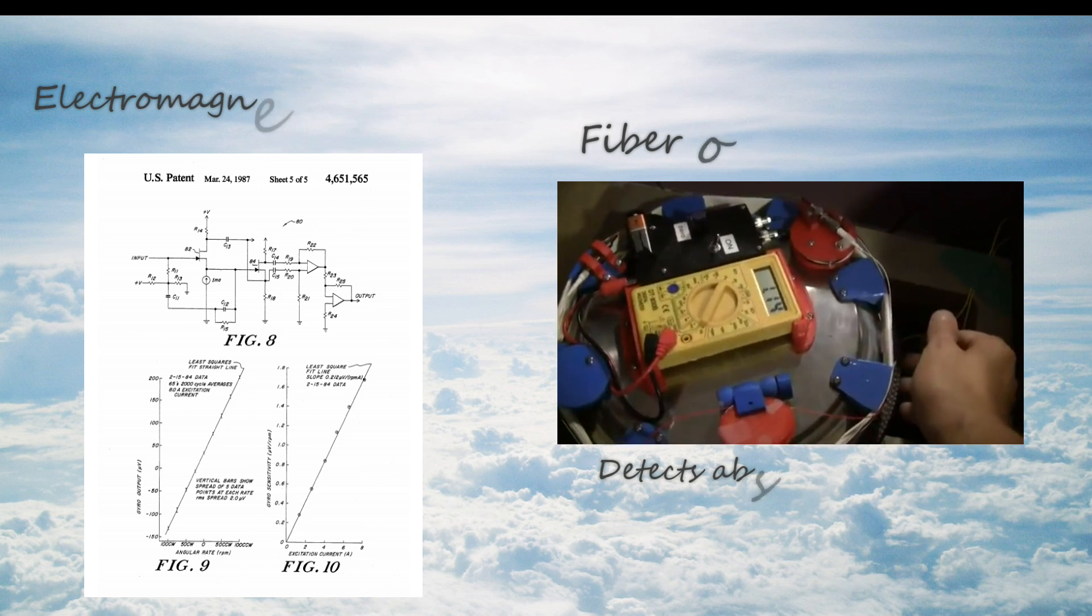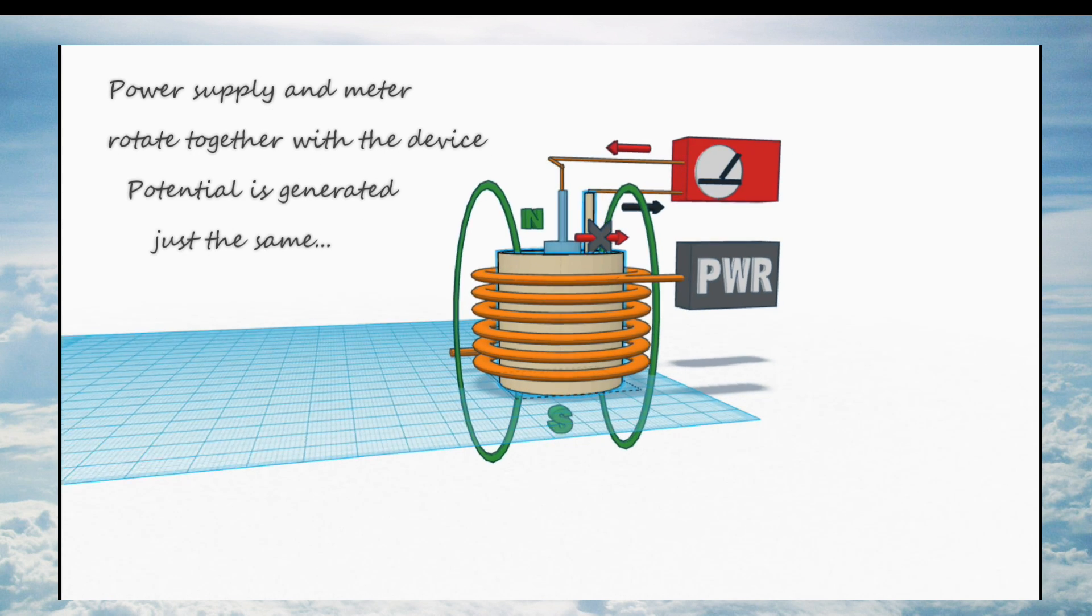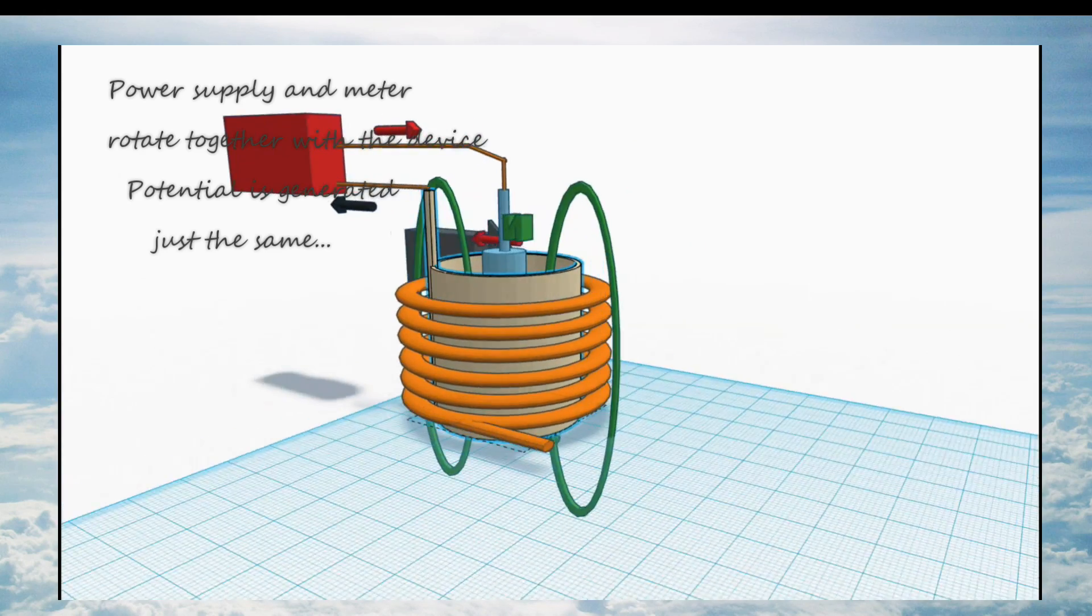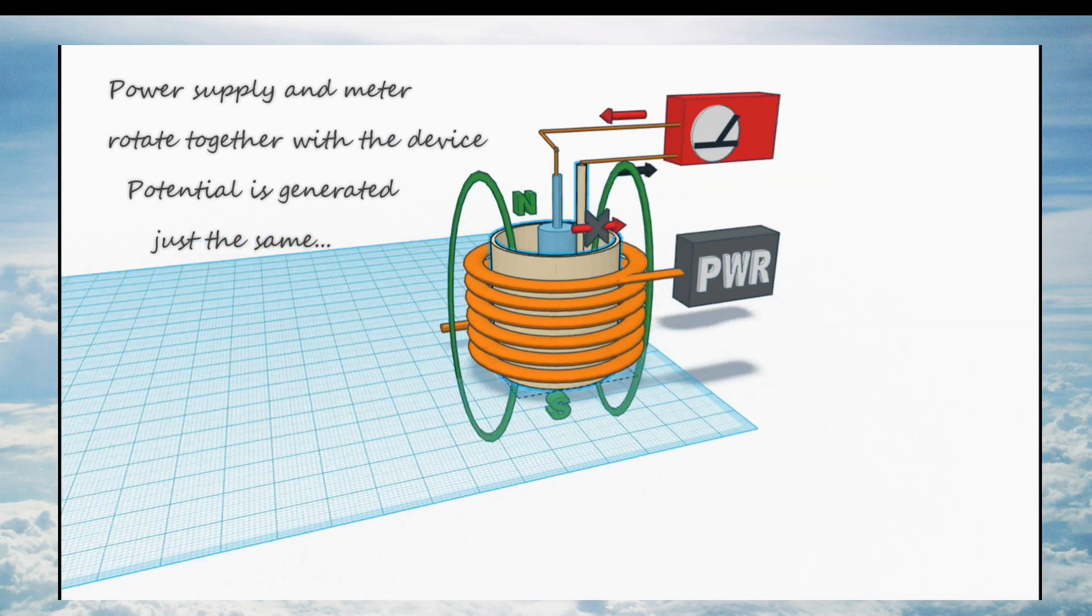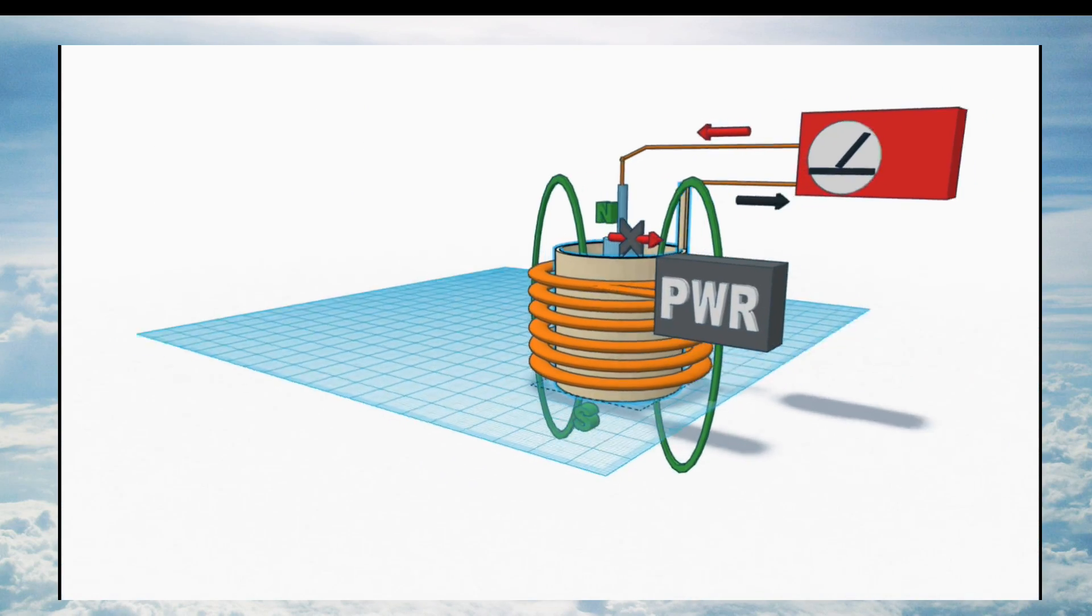Finally, the Keene patent describes the device as working both with a power supply rotating with the gyroscope, or an external power supply, whichever is more convenient. No argument can be made that induction occurs because the power supply lines are cut by a hypothetical rotating magnetic field.